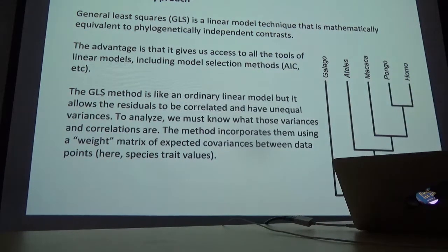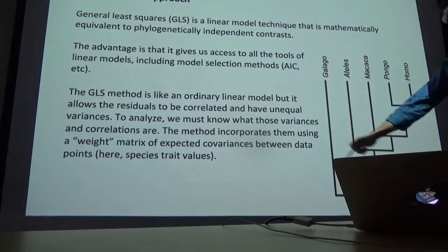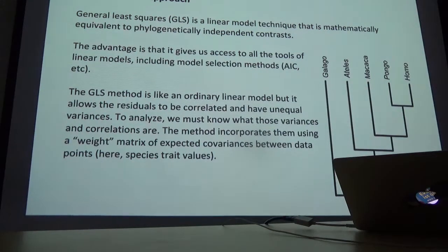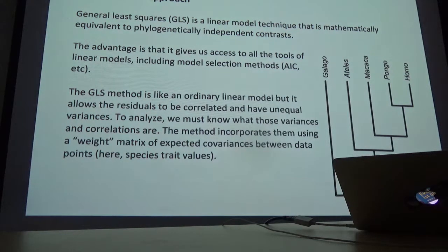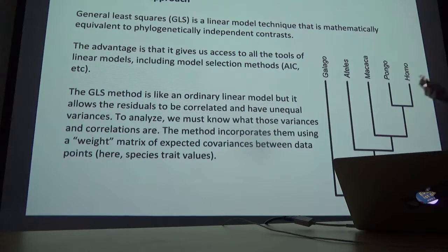General Least Squares is like an ordinary linear model, but it assumes that the residuals are correlated and do not have equal variance. The assumptions of LM are that residuals are independent and have equal variance; General Least Squares liberates you from that assumption, in the case where you actually know what the error structure of the residuals is. And it's phylogeny — under a Brownian motion assumption — that provides that in this context.